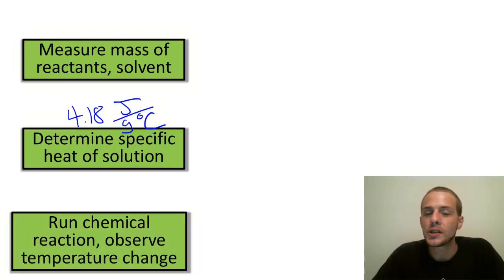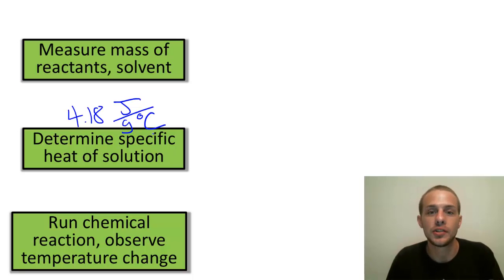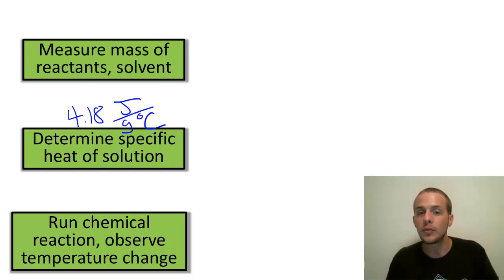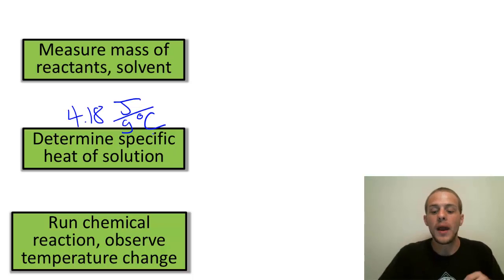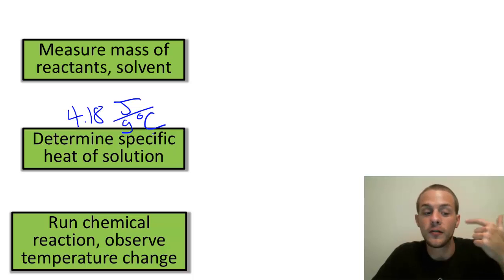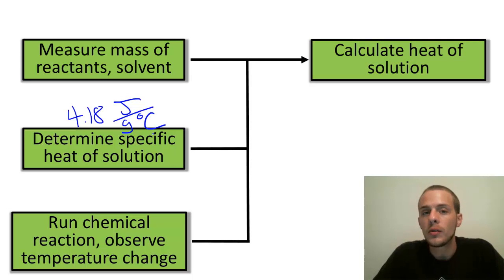Then you run the chemical reaction, which will produce a temperature change. If the temperature increases, you have an exothermic reaction — energy is being released into the surroundings. If the temperature decreases, you have an endothermic reaction — one that takes in energy from the solution and surroundings. With the mass of the solution, the specific heat, and the temperature change, you can calculate the heat of the solution.